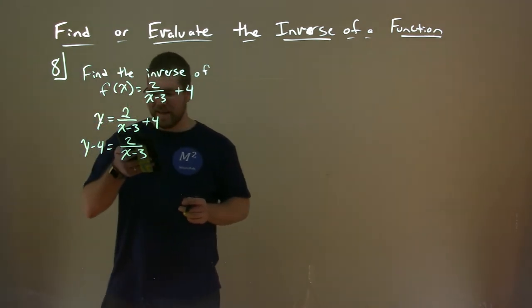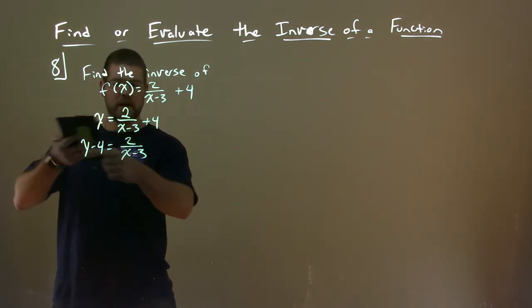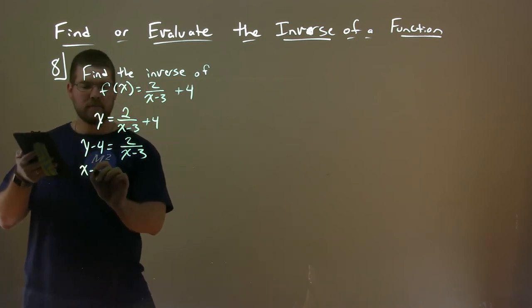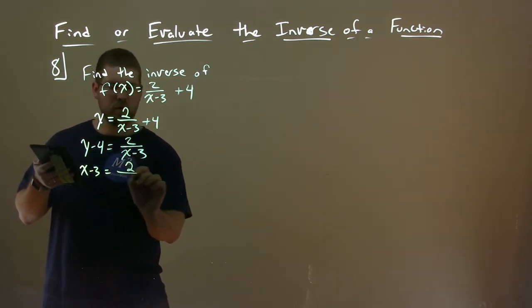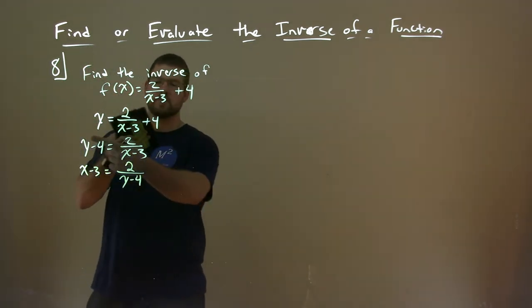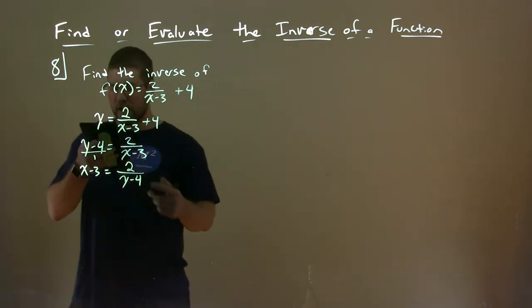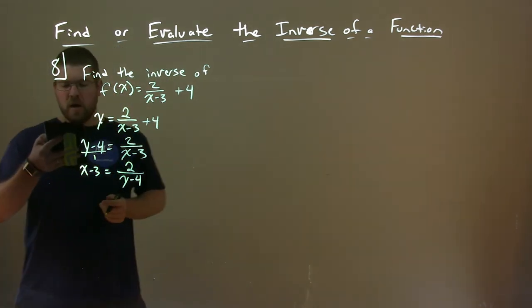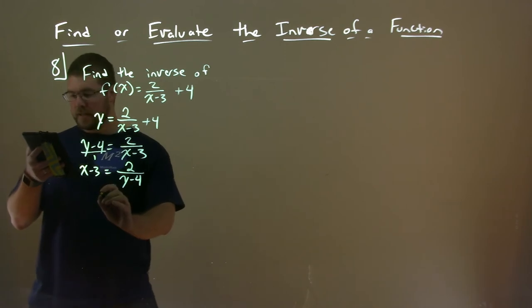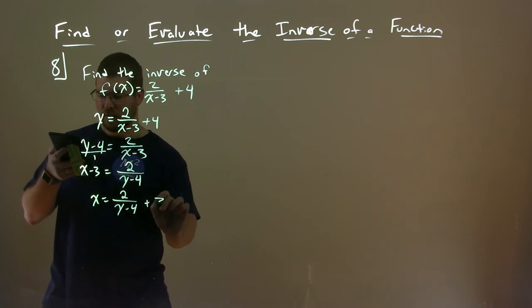And we're left with y minus 4 equals 2 divided by x minus 3. Then what we can do is swap the x minus 3 and the y minus 4. And we're left with x minus 3 here equals 2 over y minus 4. So it's not cross-multiply, it's just swapping here. And you can see it like that. You need a fraction, but you're allowed to swap like that. Alright. Add a 3 to both sides.